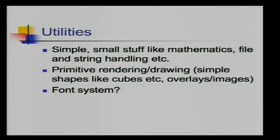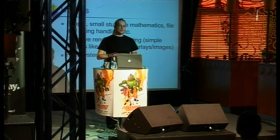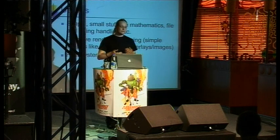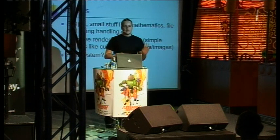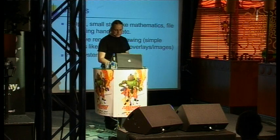Then there are utilities — small things in the demo engine like vectors, matrices, maybe quaternions, string classes, file loading, and so on. Maybe even some simple quick ways to test stuff out by rendering primitives. I think you should have one class in the demo engine where you can really quickly put something on the screen — that will help you test things out. These are really minor things, and when you need them you'll probably write them, so use these when you feel you need them.